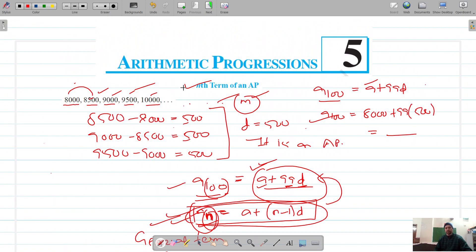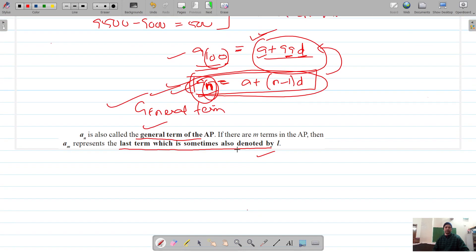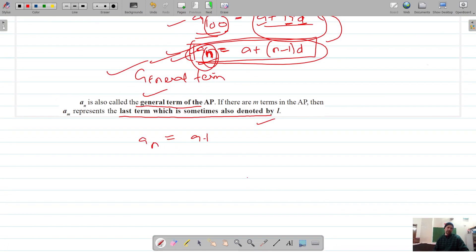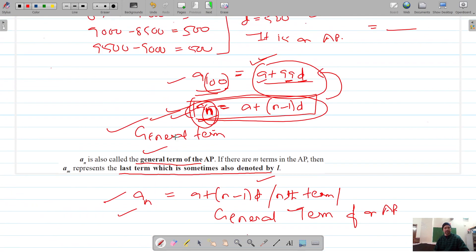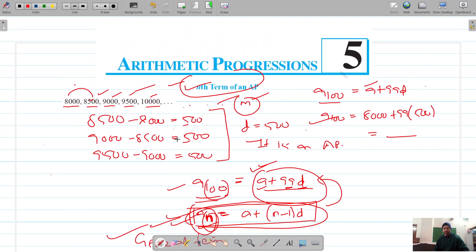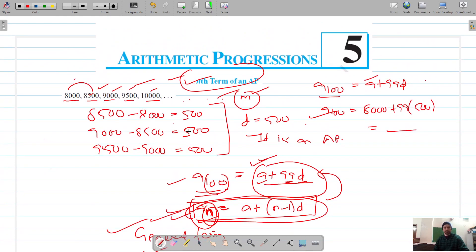Let's see what type of questions we are going to get on this nth term or the general term of an AP. By this time we all know that an is a plus n minus 1 into d. This is called the nth term or the general term of an AP. By using this formula we can find any number of the term in the given AP. So let's move on to exercise 5.2. Thank you for watching.